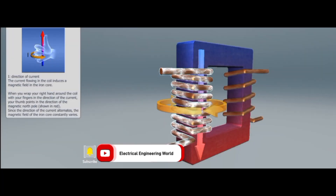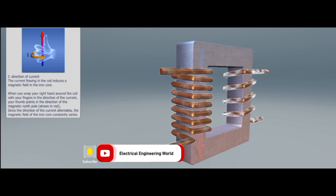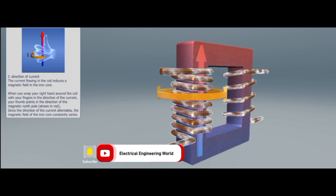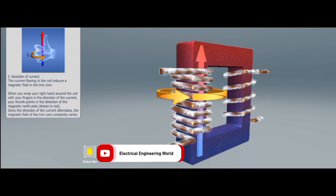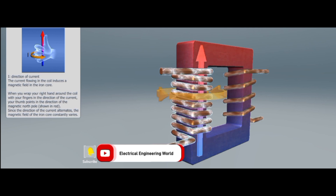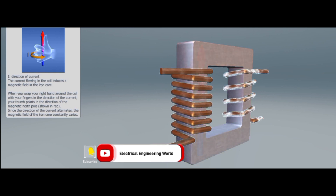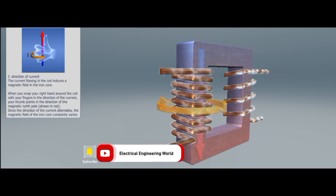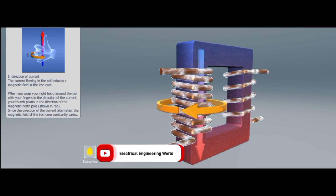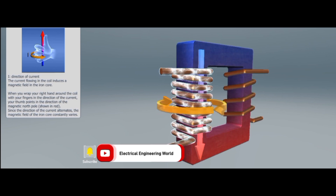The current flowing in the coil induces a magnetic field in the iron core according to the right-hand grip rule. When you wrap your right hand around the coil with your fingers in the direction of the current, your thumb points in the direction of the magnetic north pole.